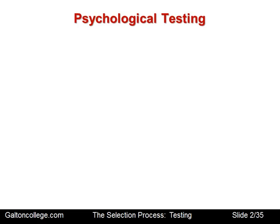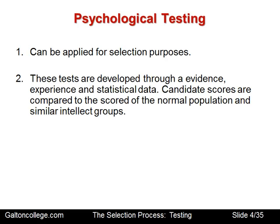The first one we'll start with is psychological testing. This can be applied for selection purposes to see if a candidate matches the requirements — if they've got the right temperament, the right orientation, the right psychological perspective for the tasks required and if they are suitable for the job. The tests are developed through evidence, experience and statistical data.